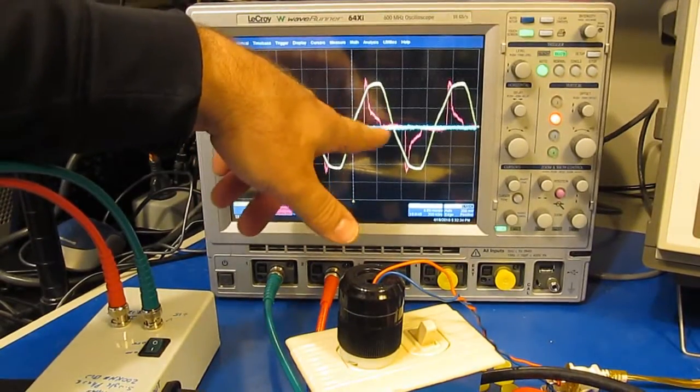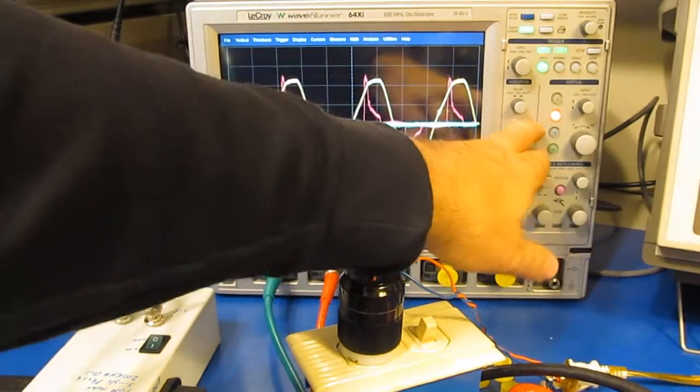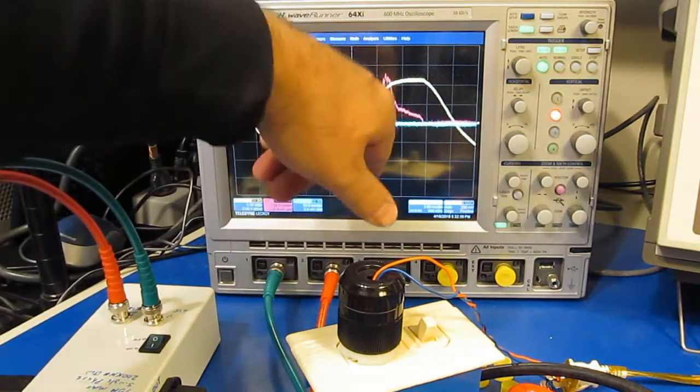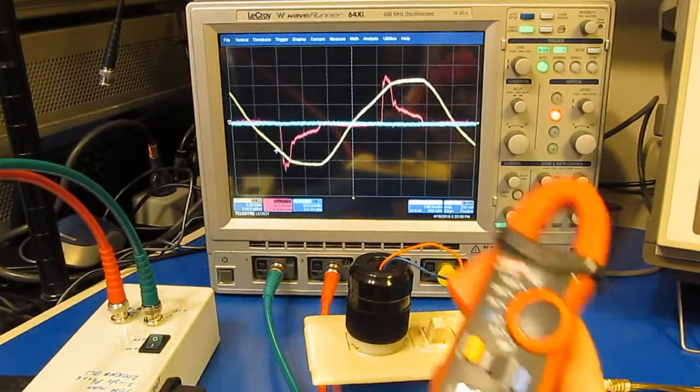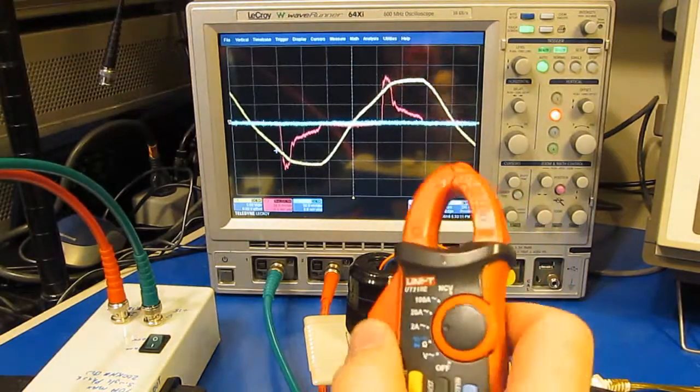And our pink trace is the current and the yellow is the voltage. You can see a single cycle and the modified current clamp is on channel 3, which is the blue trace.